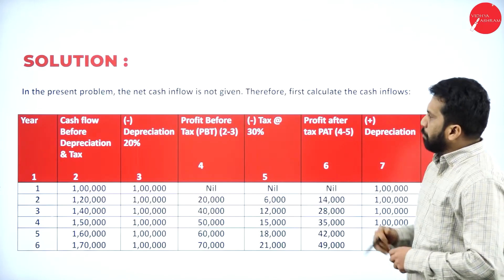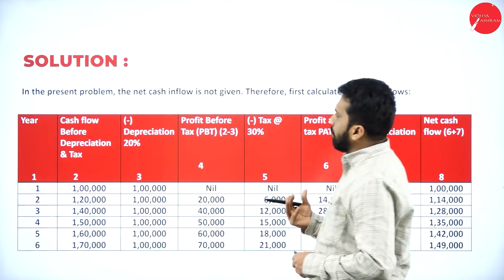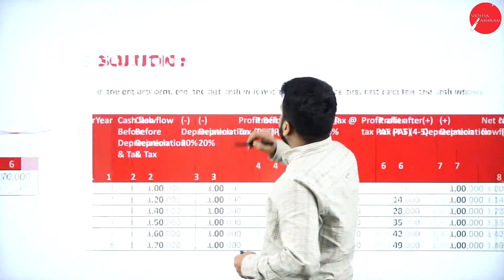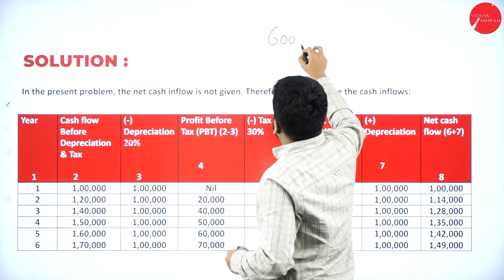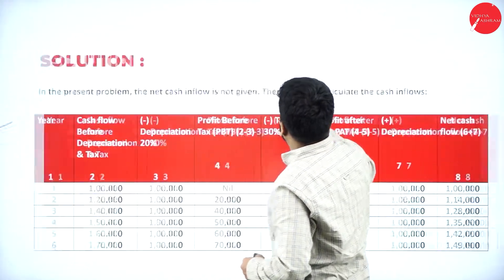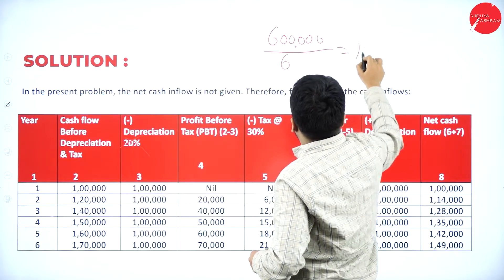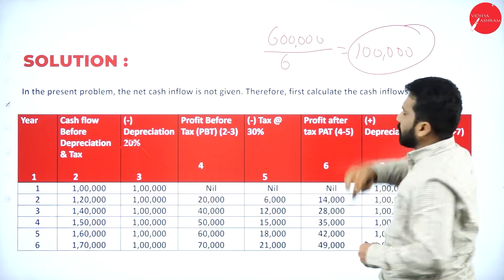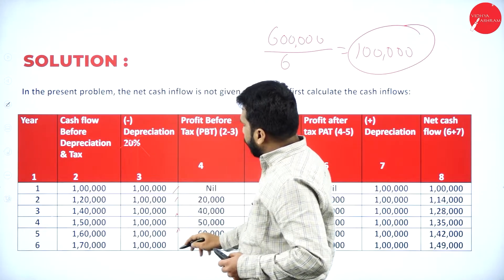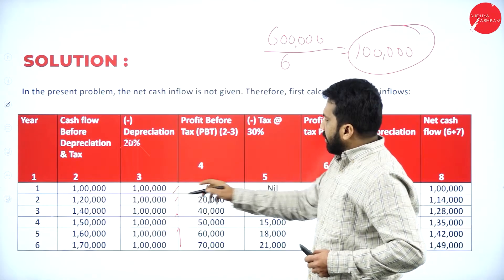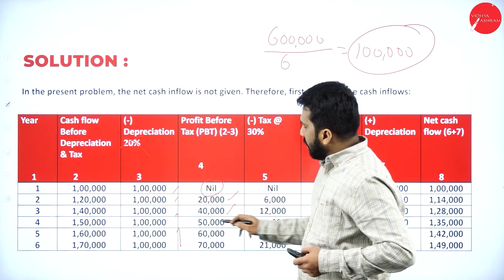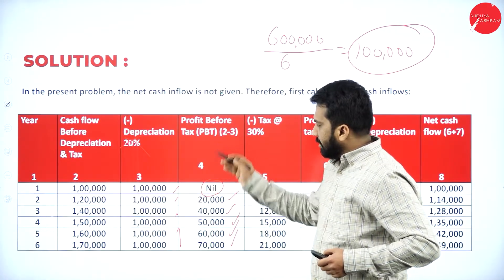Now for depreciation — we don't go with 20%. The project value is 6 lakh divided by 6 years, which gives us 1 lakh depreciation per year for all years. So subtracting: 1 lakh minus 1 lakh = nil, 1 lakh 20,000 minus 1 lakh = 20,000, then 40,000, 50,000, 60,000, and 70,000.